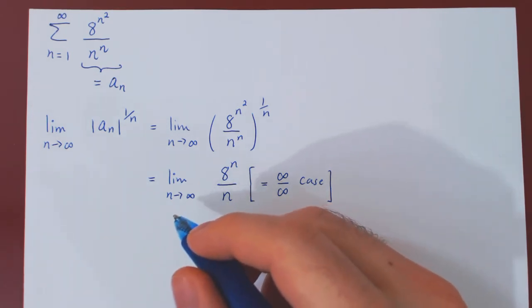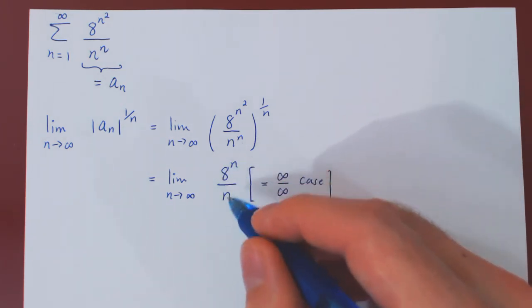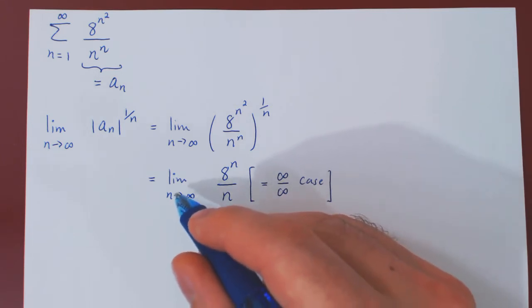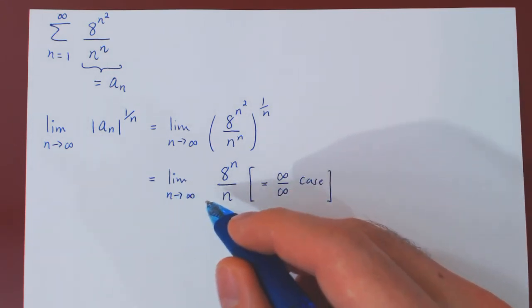The one thing I'll be picky about is, to use L'Hopital's rule we want to differentiate the numerator and denominator, but here we're using n as a discrete variable. So, n equals 1, 2, 3, and so forth.